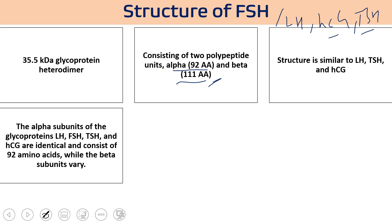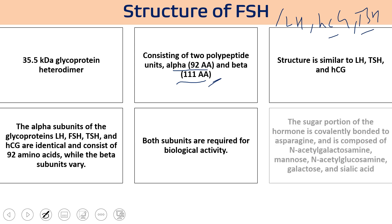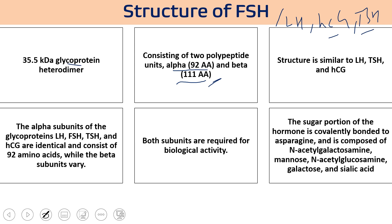The alpha subunit of LH, FSH, TSH, and HCG are identical, consisting of 92 amino acids, while their beta chains vary. Both subunits — alpha and beta — are required for their activity. Since it is a glycoprotein, sugars are covalently associated with the asparagine amino acid; the sugars include N-acetylgalactosamine, mannose, N-acetylglucosamine, galactose, and sialic acid.